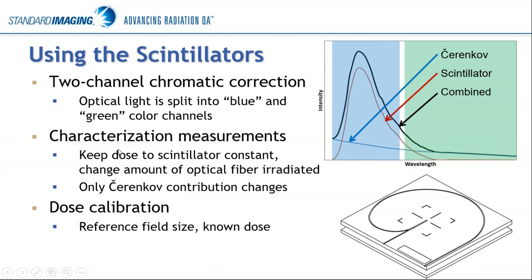For characterization, with our W1 we provide a characterization slab; with the W2 it's a smaller bracket that can go into your water tank. You do two sets of measurements: one called a minimum fiber measurement, where the fiber comes straight out of the field, and a second called the maximum fiber measurement, where you wrap it around the channel through the slab. The idea is to keep the dose to the scintillator constant while changing the amount of Cherenkov in the field. Based on the relative change in the green channel compared to the blue channel, we get a correction factor so we can correct the blue channel for the presence of Cherenkov light.